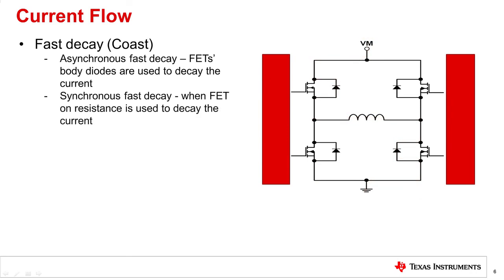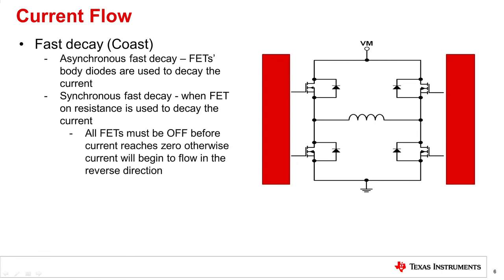On the other hand, synchronous decay is when the FET on-resistance is in the path of the current decay instead of the body diode. It is often more efficient to utilize the FET on-resistance as a safe path for current decay instead of the FET body diode. Before using synchronous decay, dead time is utilized to prevent a shoot-through condition since the opposite direction's FET will be turning on.